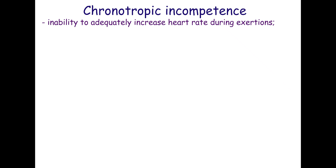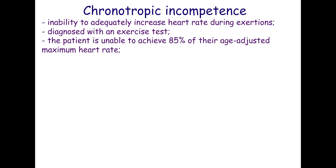Chronotropic incompetence is the heart's inability to adequately increase its rate during exercise. It is usually diagnosed with an exercise test. During the test, the patient is unable to achieve 85% of their age-adjusted maximum heart rate.